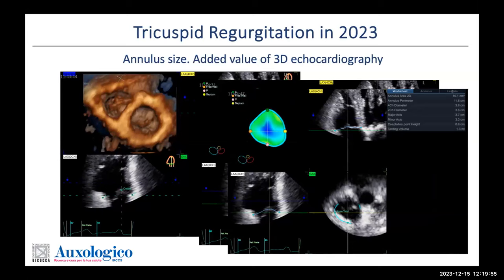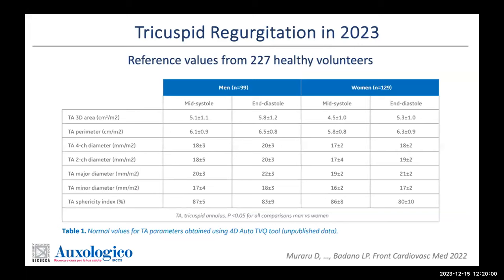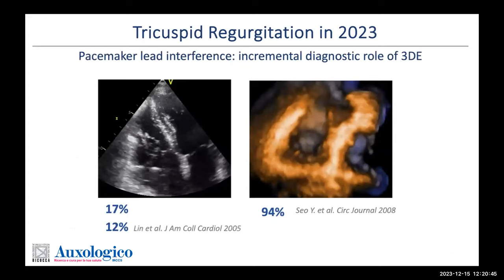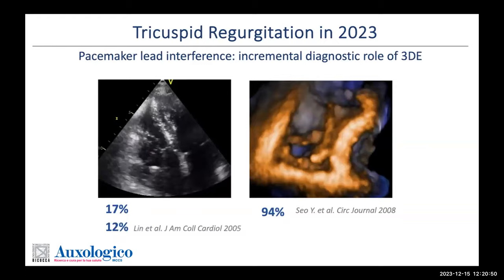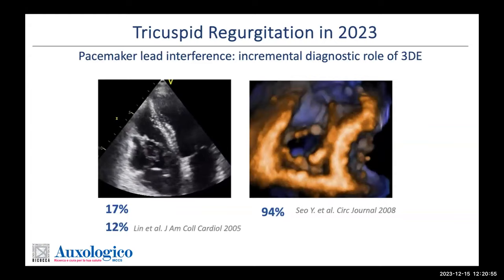Recently, Denisa Muraro from our lab published reference values obtained from 227 healthy volunteers to distinguish between a normal and enlarged tricuspid annulus. We found a difference between men and women even when indexing size for body surface area, while there is no change with age. So we only need to account for body size and sex when interpreting tricuspid annulus measurements.